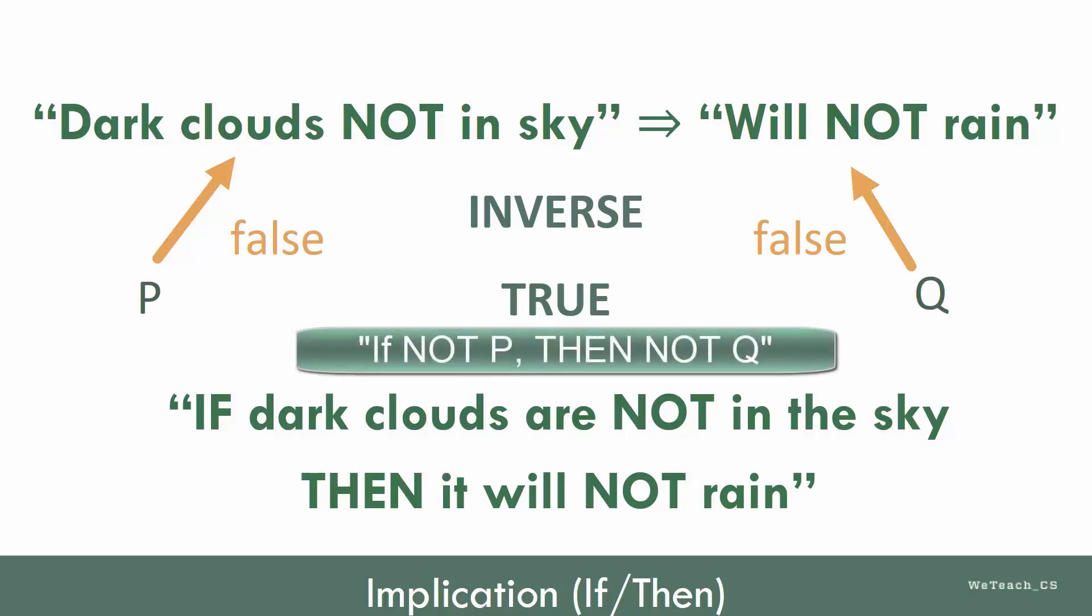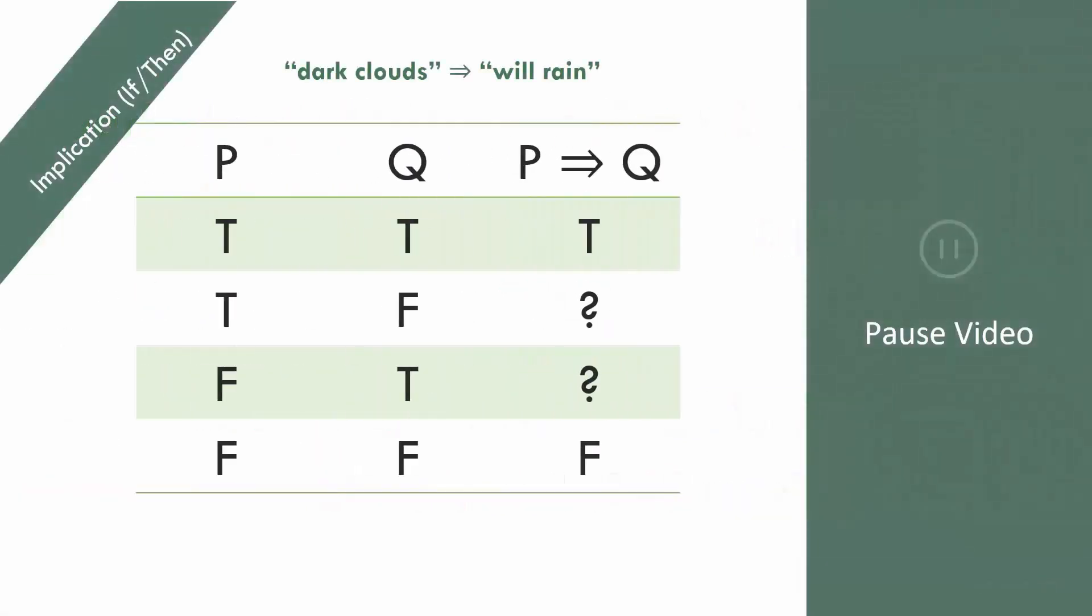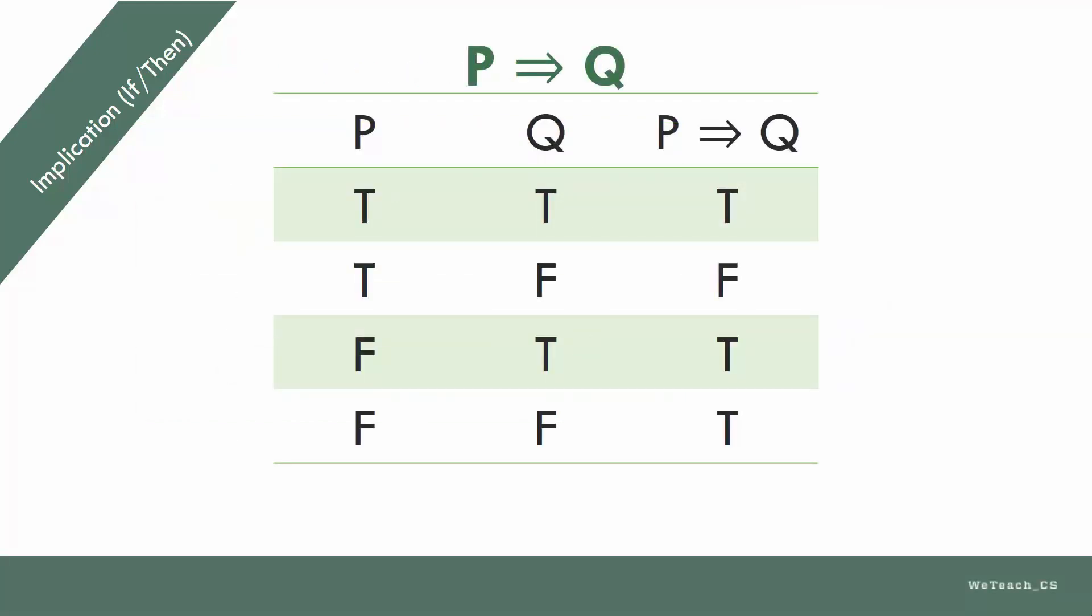It is read, if not P, then not Q. Now, there are two more true or false combinations we have not yet considered. Pause the video for a moment and think about the result for those two remaining combinations. Okay, let's see how you did.